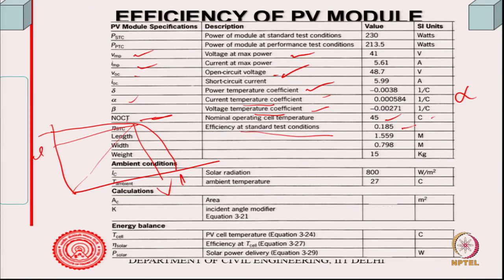Efficiency at standard test condition is P_STC divided by 800 times area — let us say 0.185. Length and width of the cell are given, so this will give me the area. This is the specification — this is how a PV module will typically be specified.